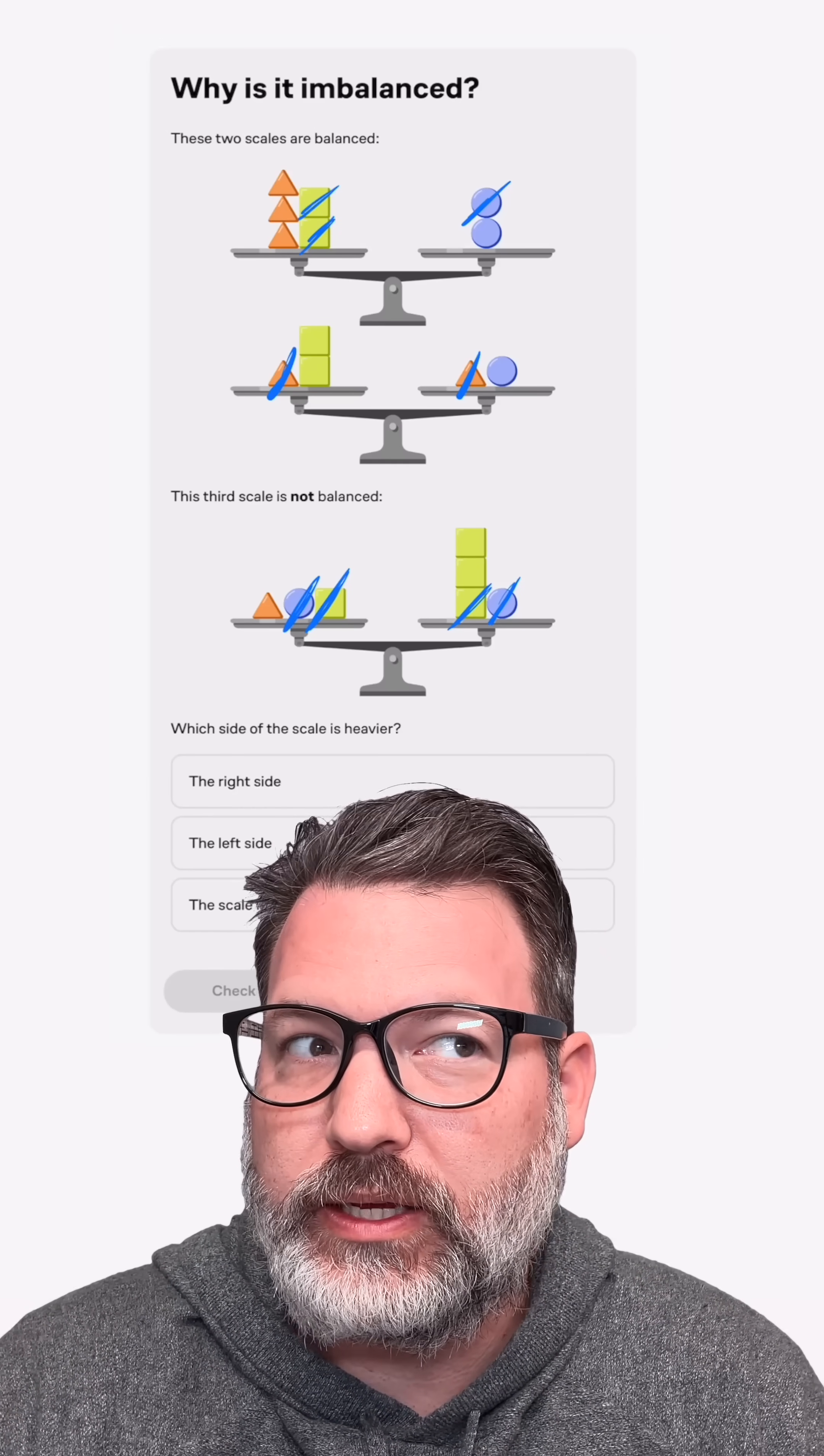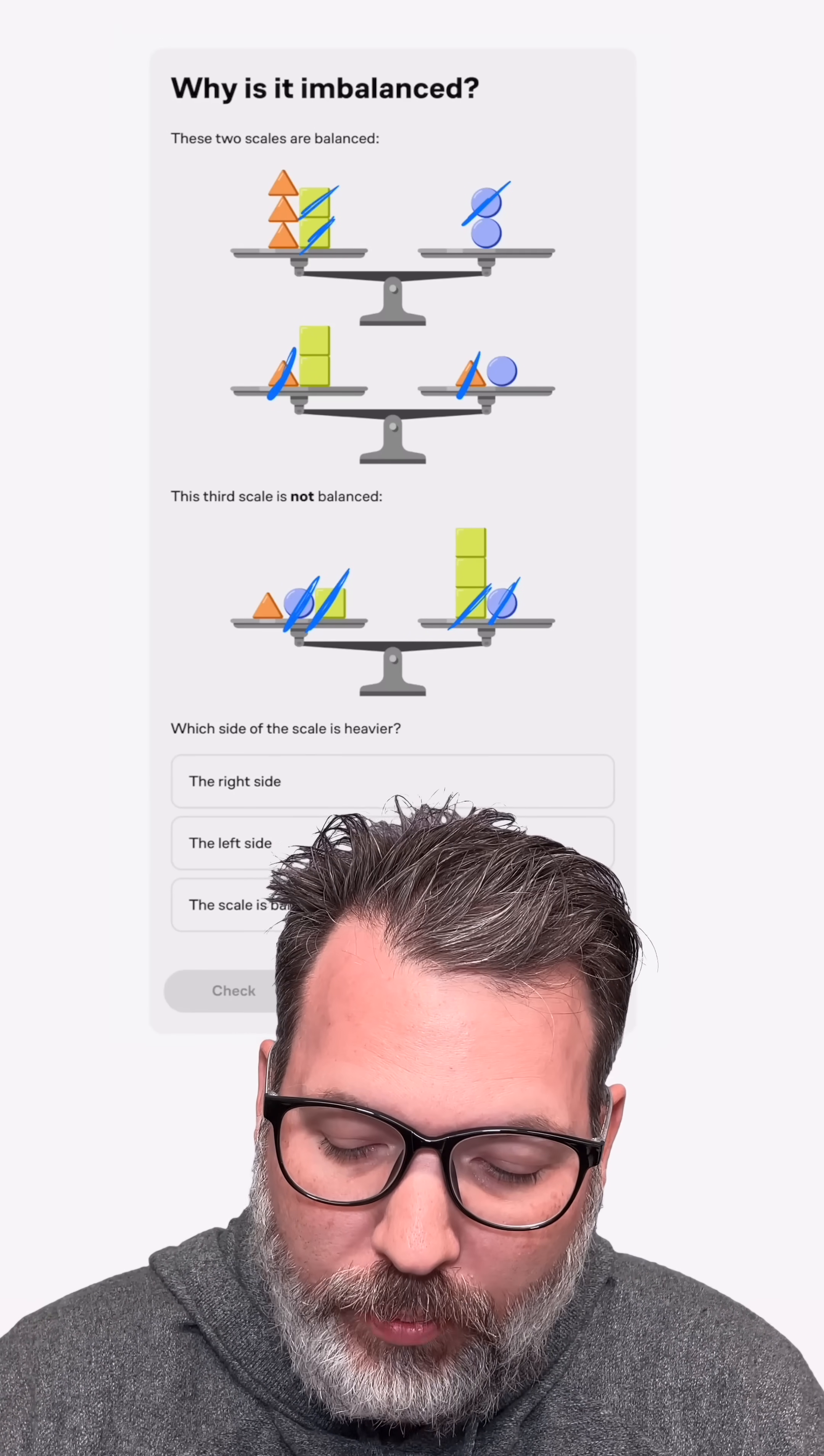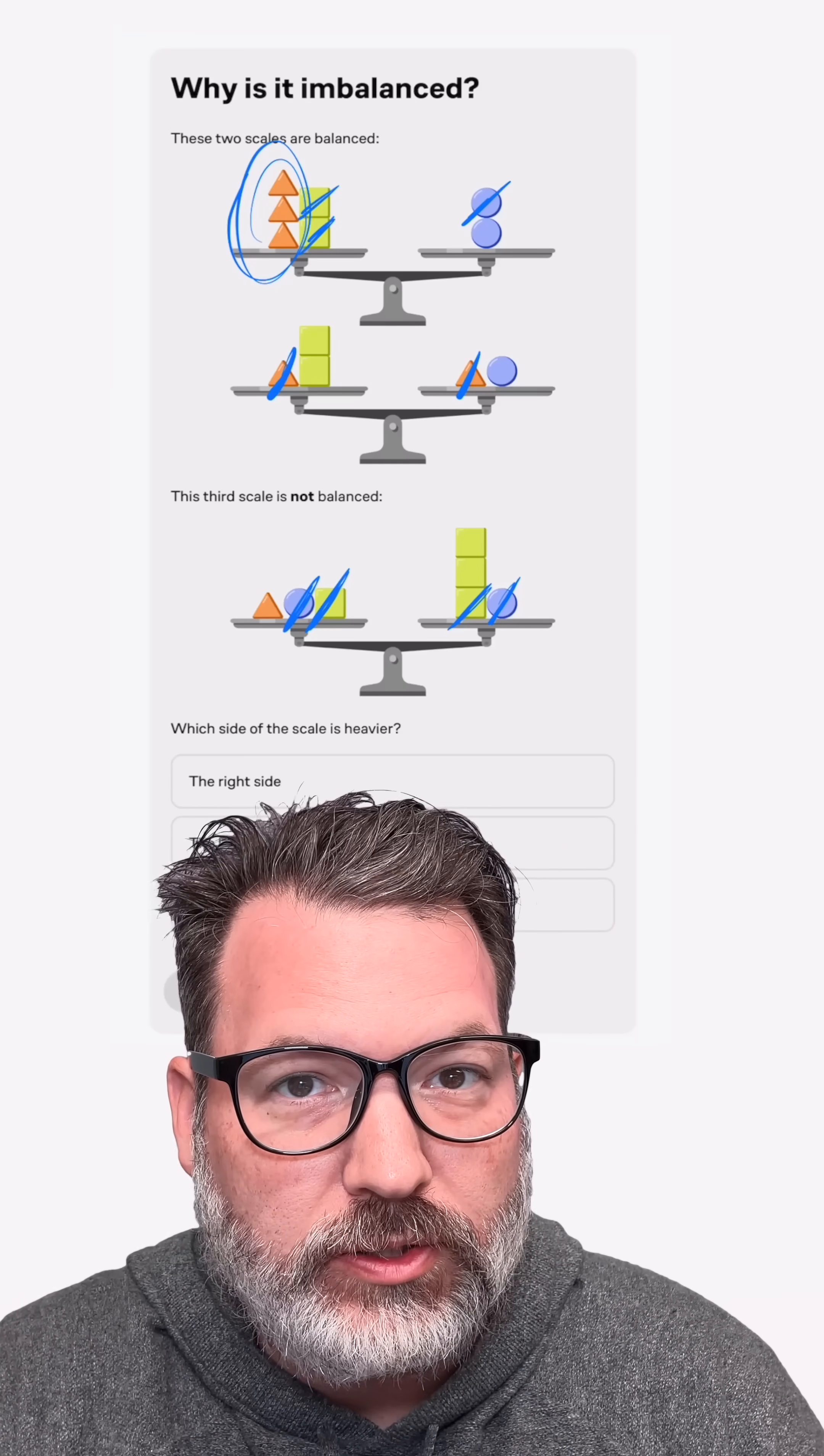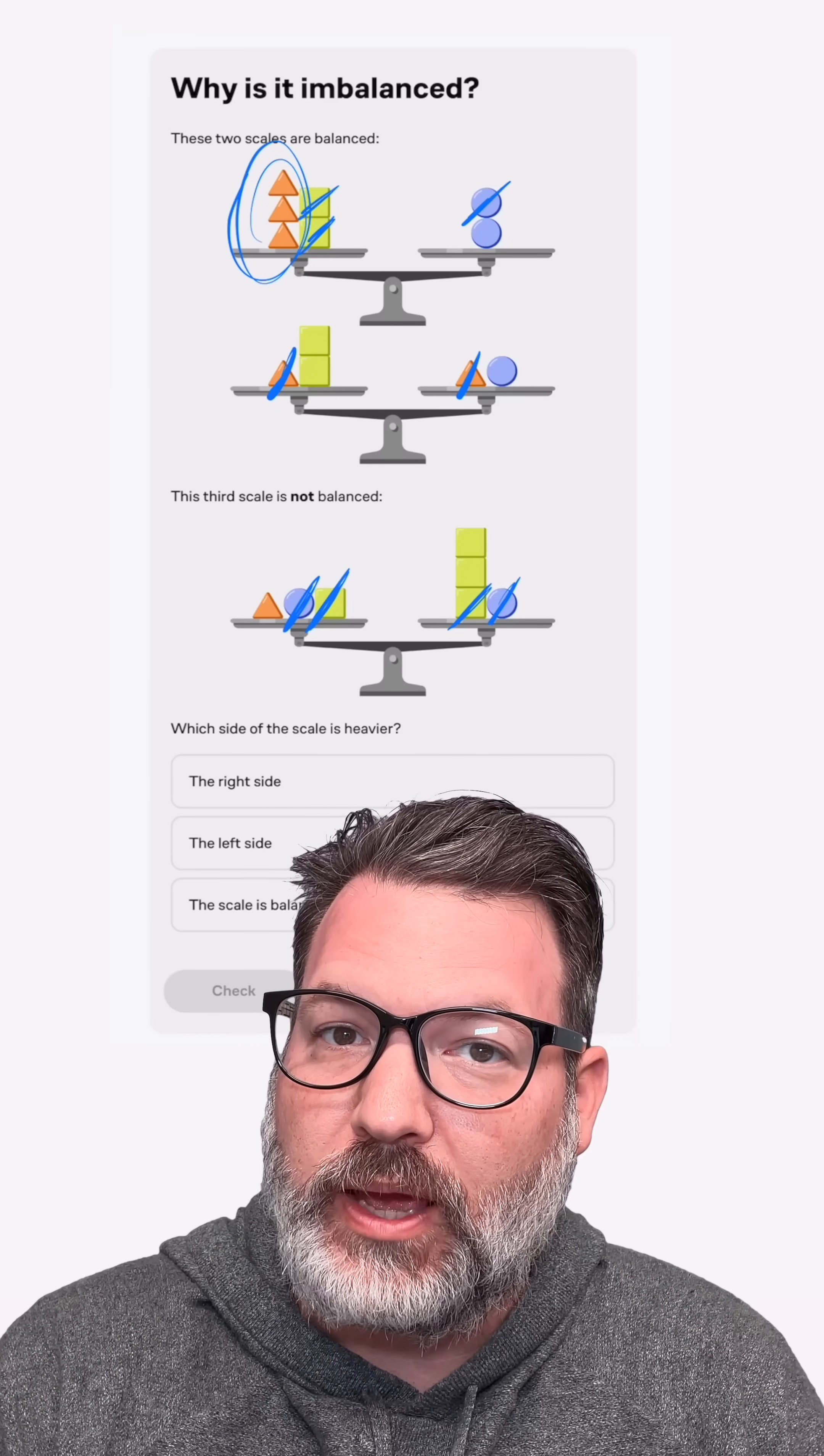But what I have left over on the right is two squares, which a moment ago we said, based on the fact that two squares are the same as a circle and three triangles are the same as a circle,